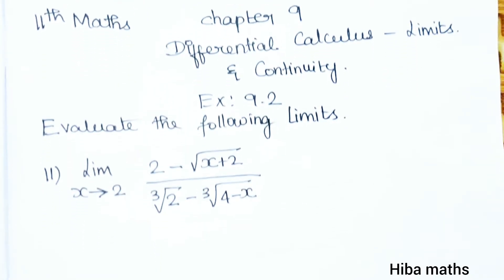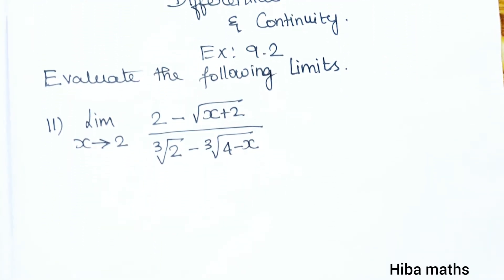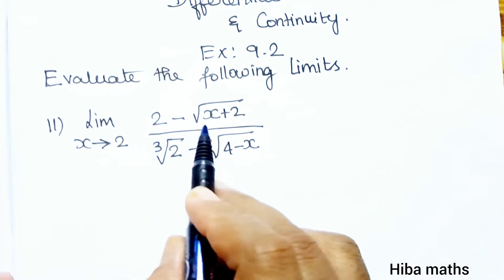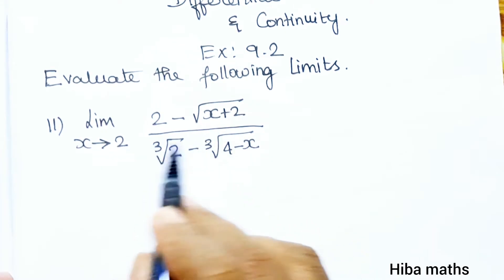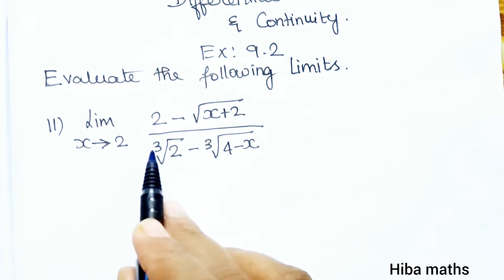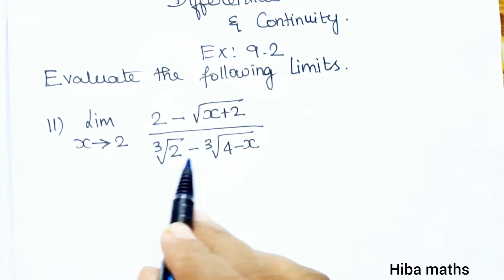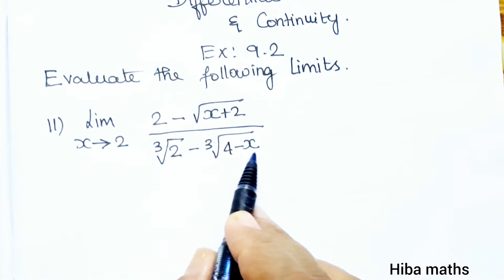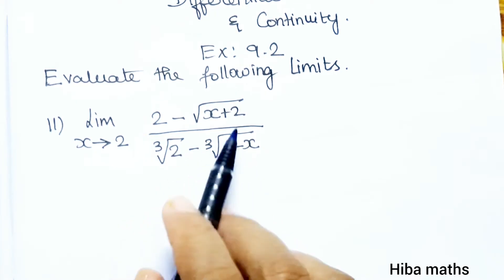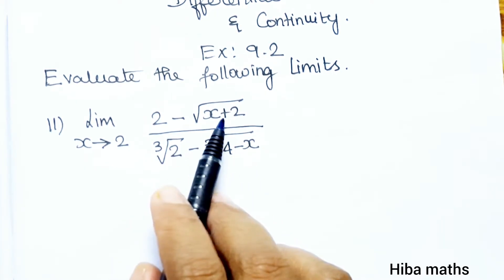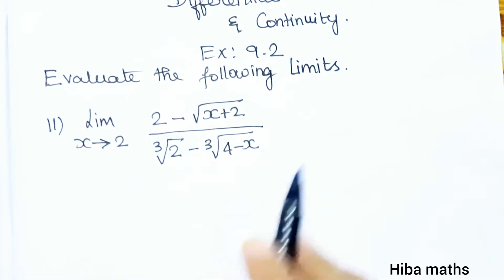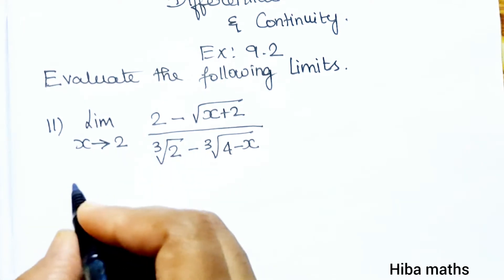Let's look at the question: limit x tends to 2, of 2 minus root of (x plus 2), divided by cubic root of 2 minus cubic root of (4 minus x). This question is of secondary type — it is a value, first level, a shuffle type.